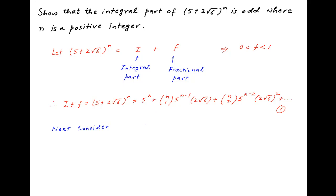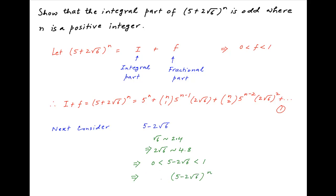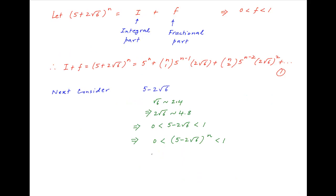Next, consider the number (5 - 2√6). Now √6 ≈ 2.4, therefore 2√6 ≈ 4.8, and therefore it follows that (5 - 2√6) is a proper fraction, that is, it lies between 0 and 1. We know that a proper fraction raised to the power n, where n is a positive integer, is also a proper fraction. Therefore (5 - 2√6)^n lies between 0 and 1.